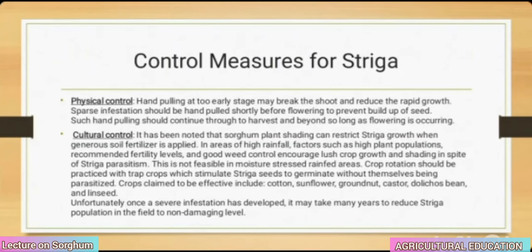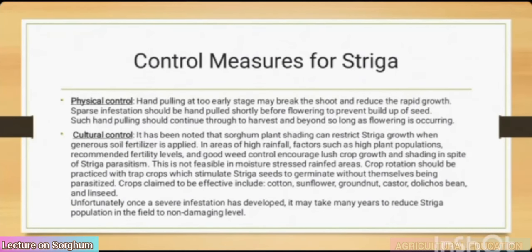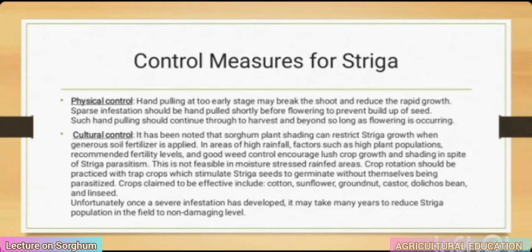Cultural control is not feasible in moisture-stressed rain-fed areas. Crop rotation should be practiced with trap crops to stimulate Striga seeds to germinate without a host. Crops claimed to be effective include cotton, sunflower, groundnut, castor, Tephrosia bean and linseed. Unfortunately, once a severe infestation has developed, it may take many years to reduce the Striga population in the field to non-damaging levels.